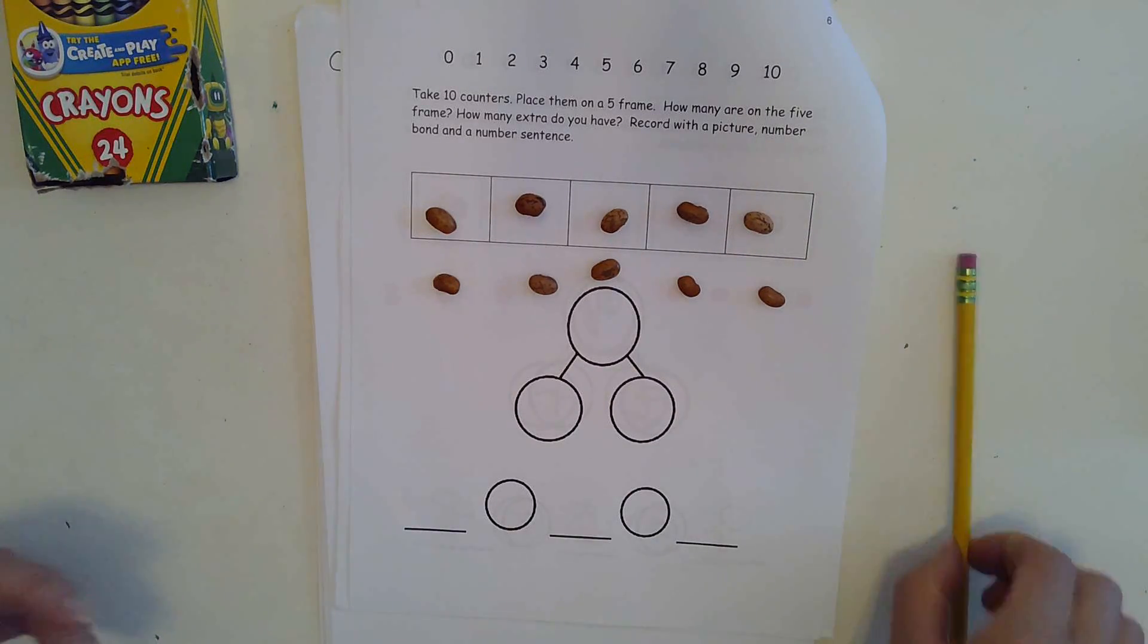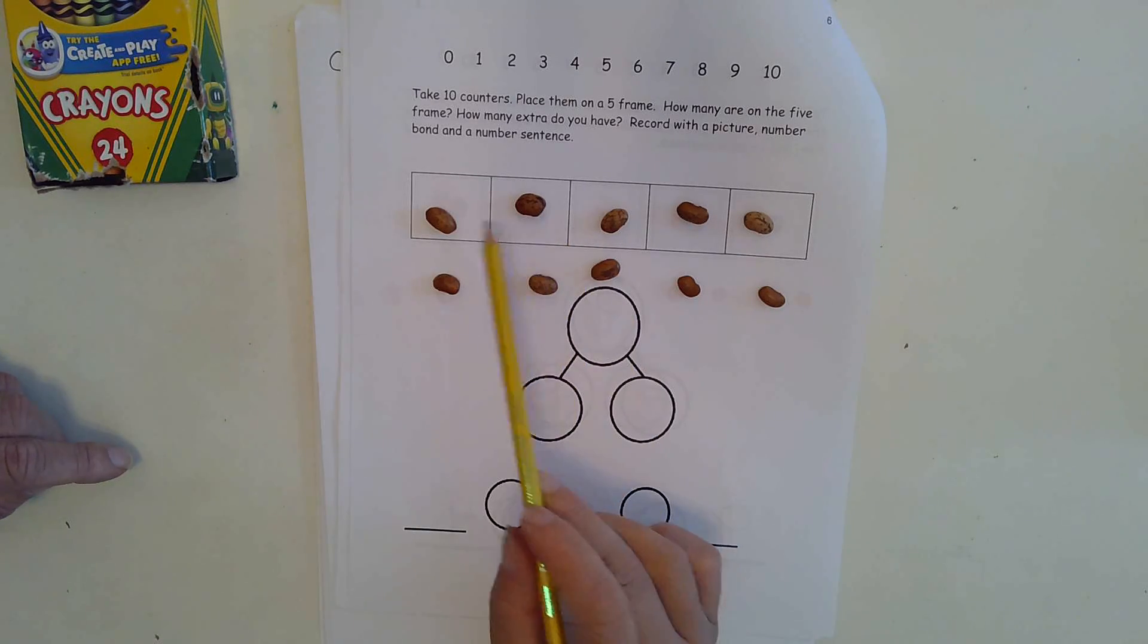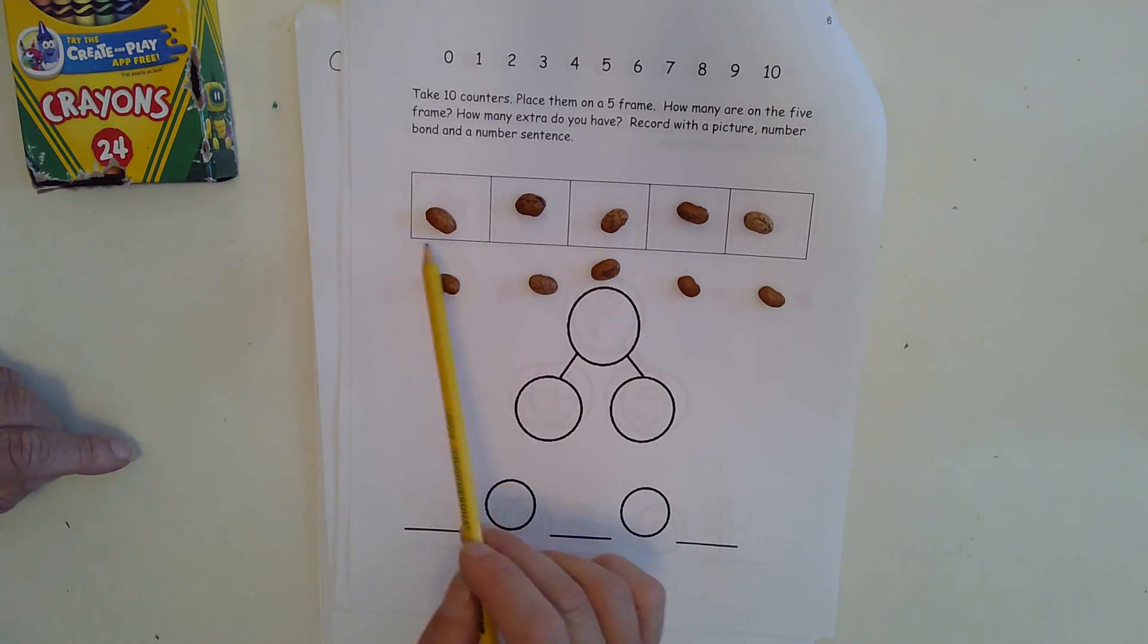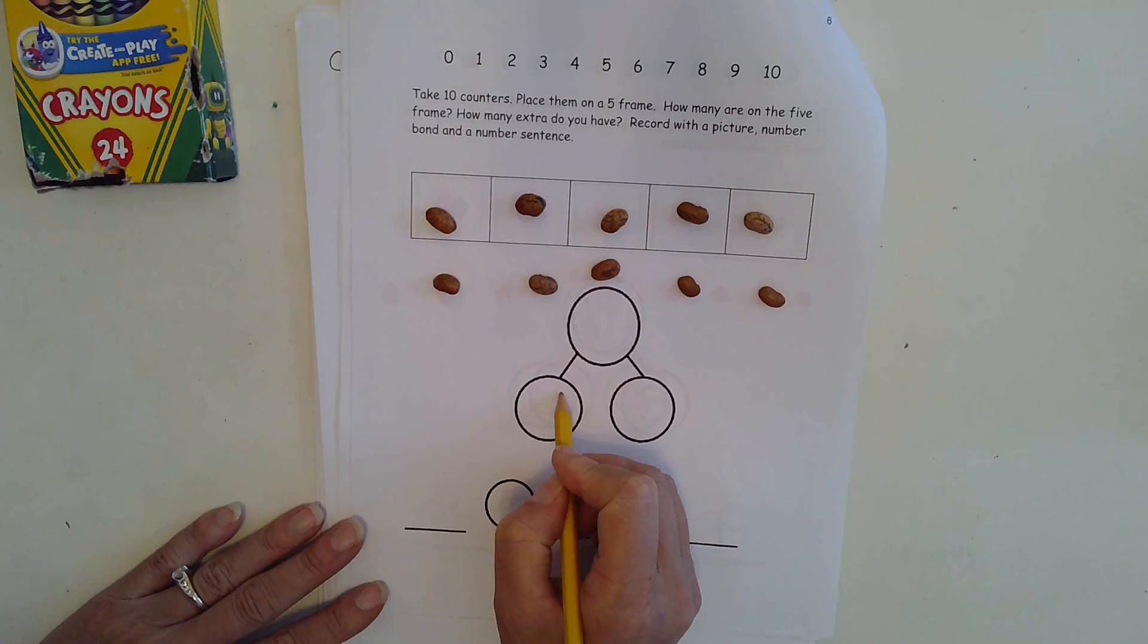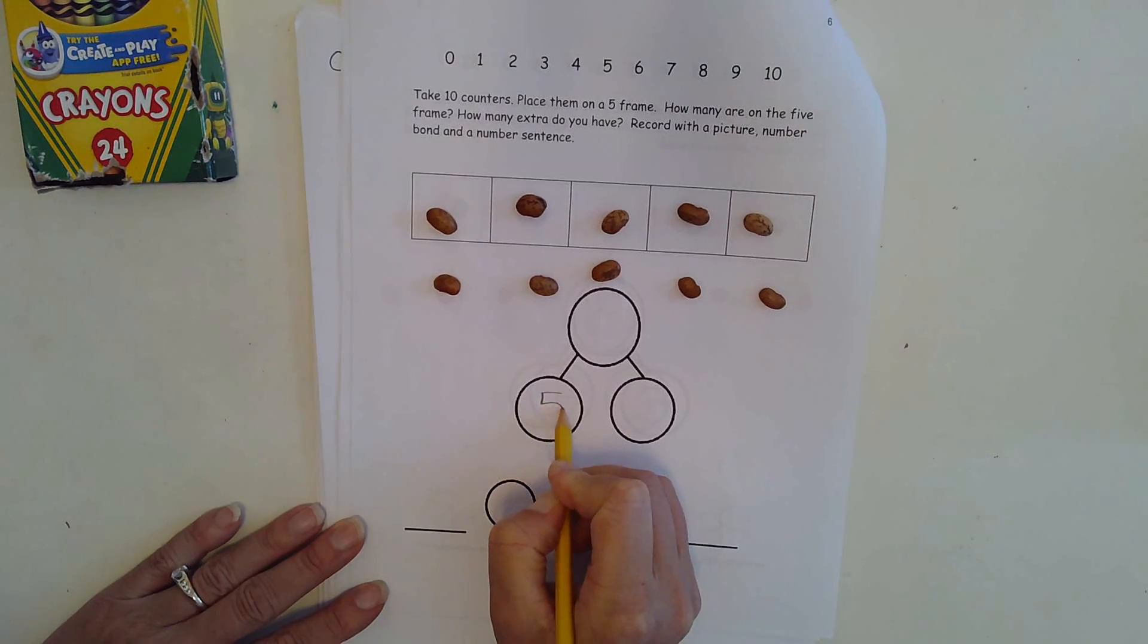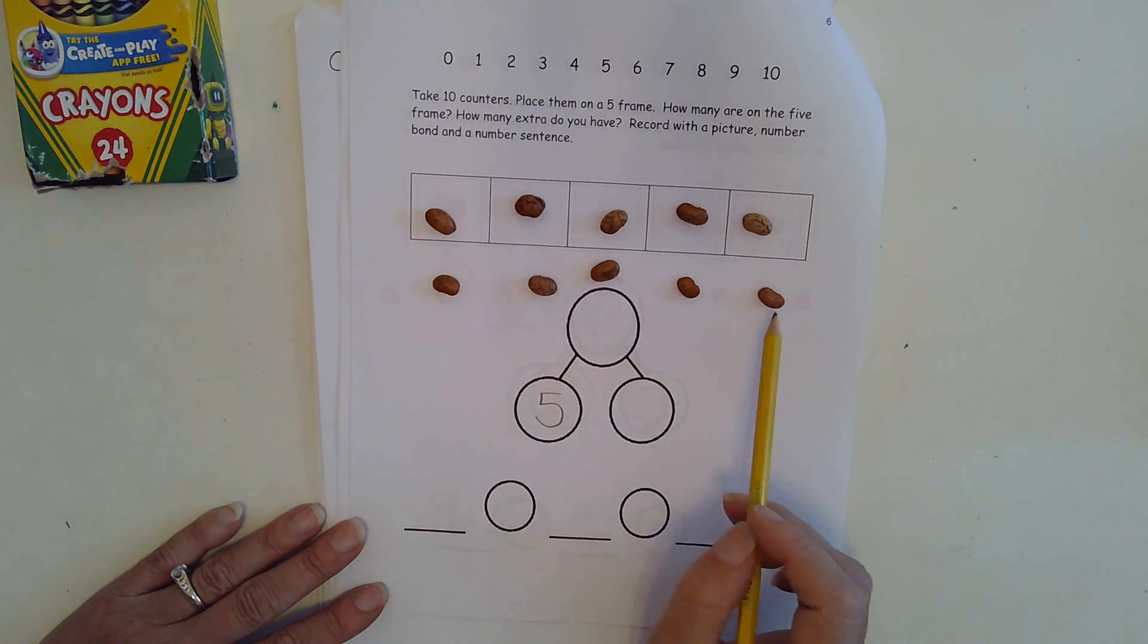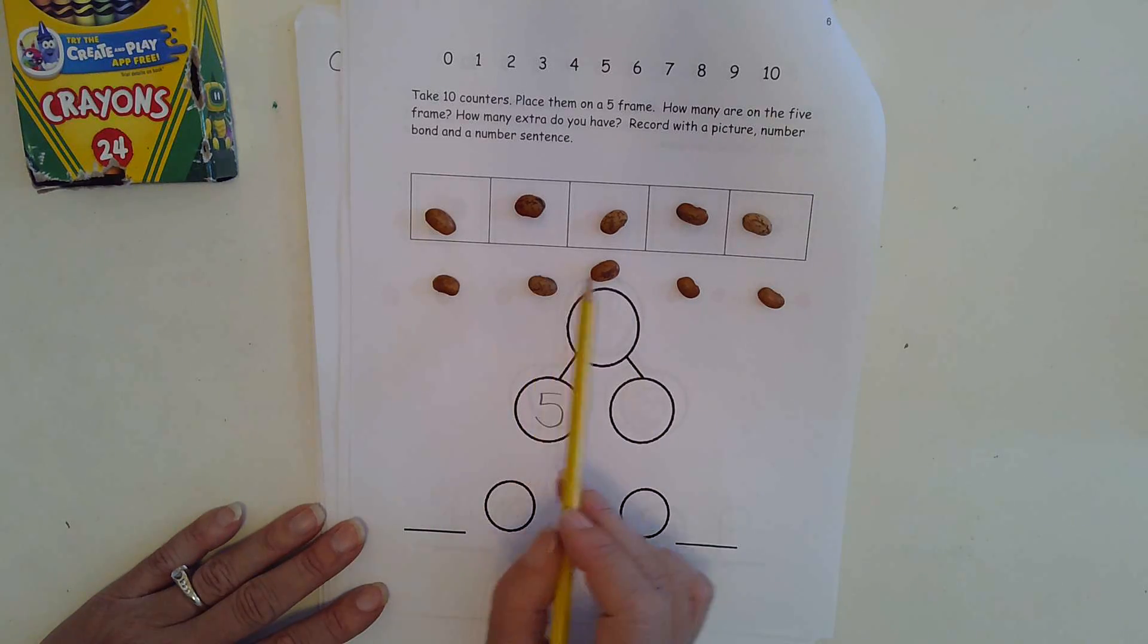Now if I look, I can tell how many are in my five frame. One, two, three, four, five. Five are in the five frame. The other part is out of the five frame. One, two, three, four, five.